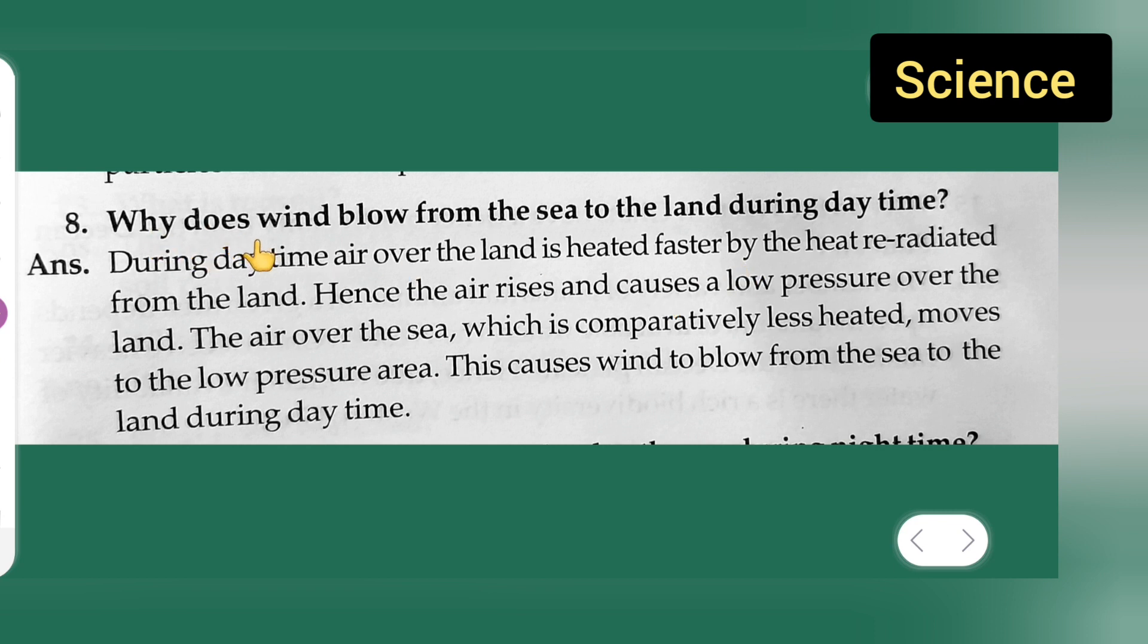Okay, so why does wind blow from the sea to the land during daytime? Answer is during daytime air over the land is heated faster by the heat radiated from the land.